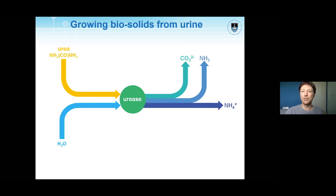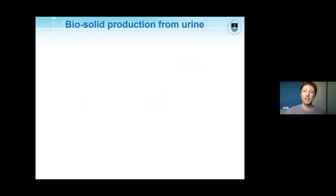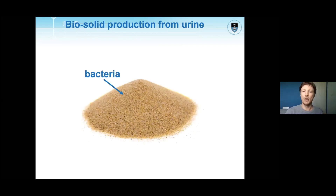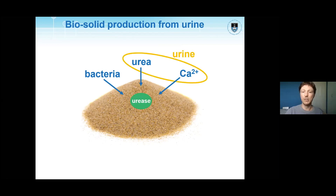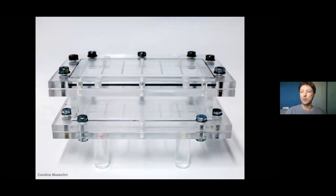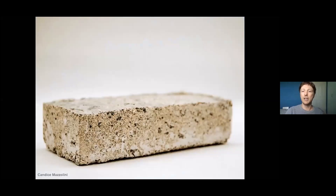We come back to the urease reaction and focus on the carbonate ion. Imagine you have sand, you colonize it with bacteria that produce urease, and you feed the bacteria a urea and calcium source from urine. The bacteria produce urease to break down urea into carbonate ions, which combine with calcium to form calcium carbonate, essentially gluing loose sand particles together. In the shape of a brick, a solid forms after four to six days using minimal energy and a completely natural process.